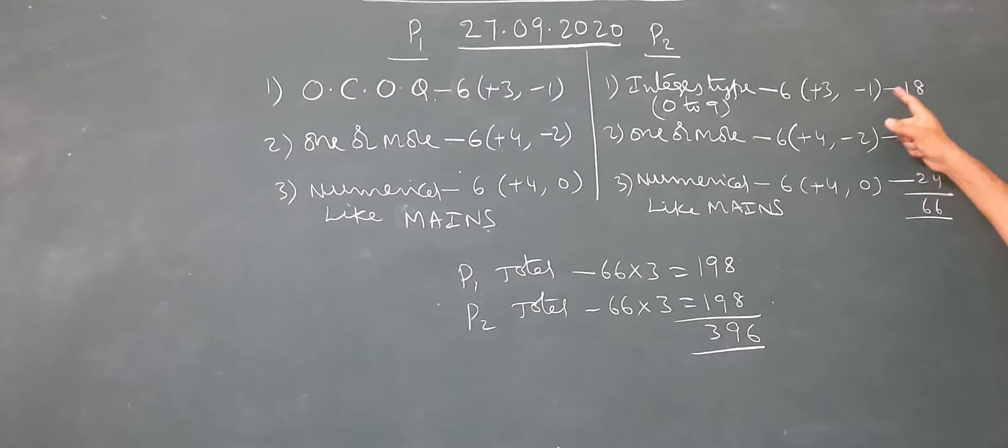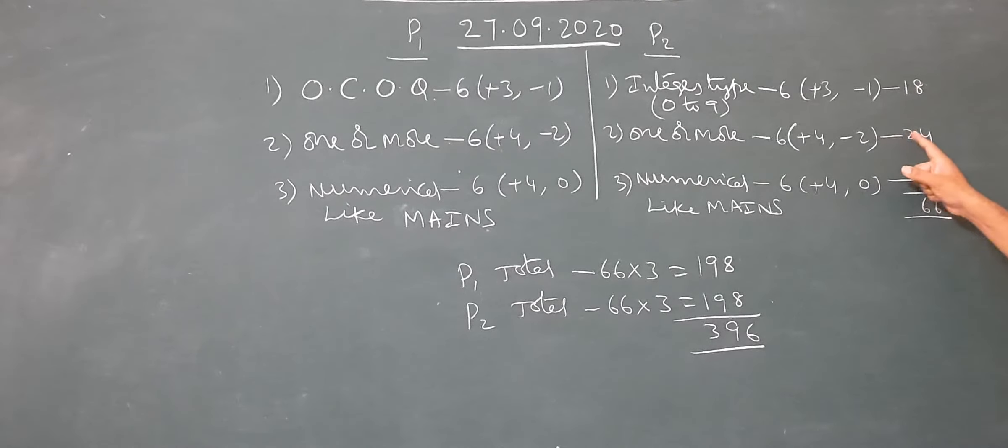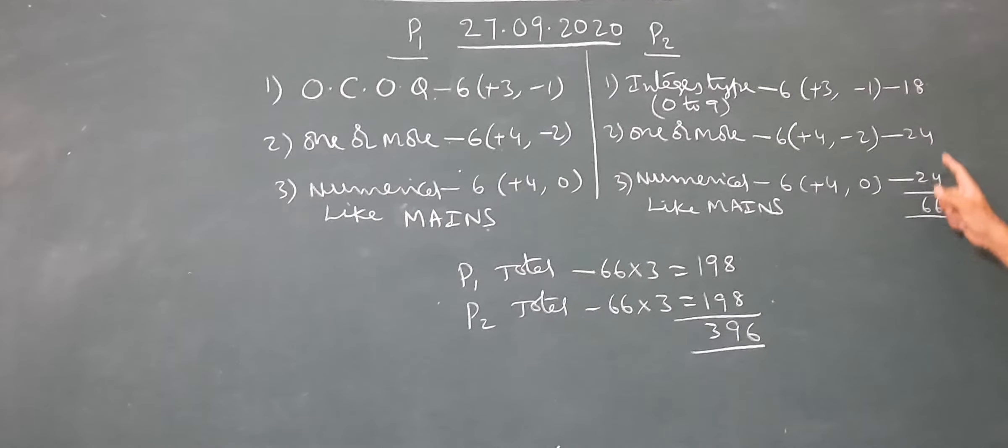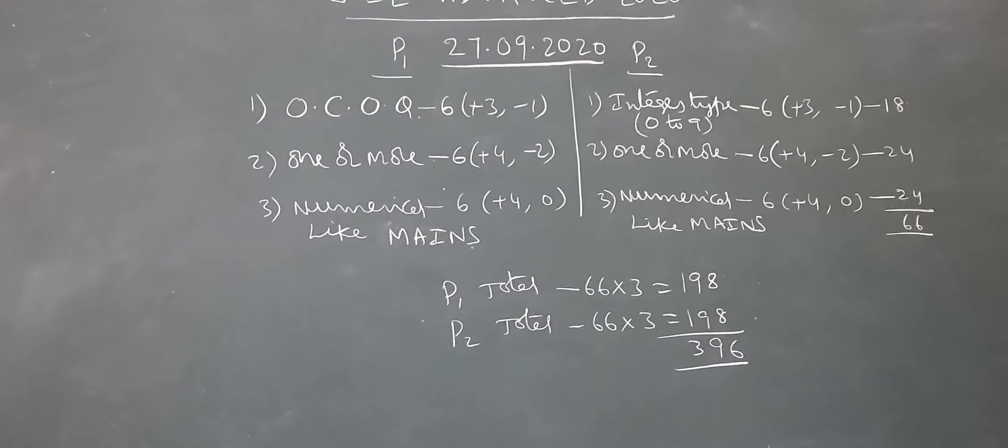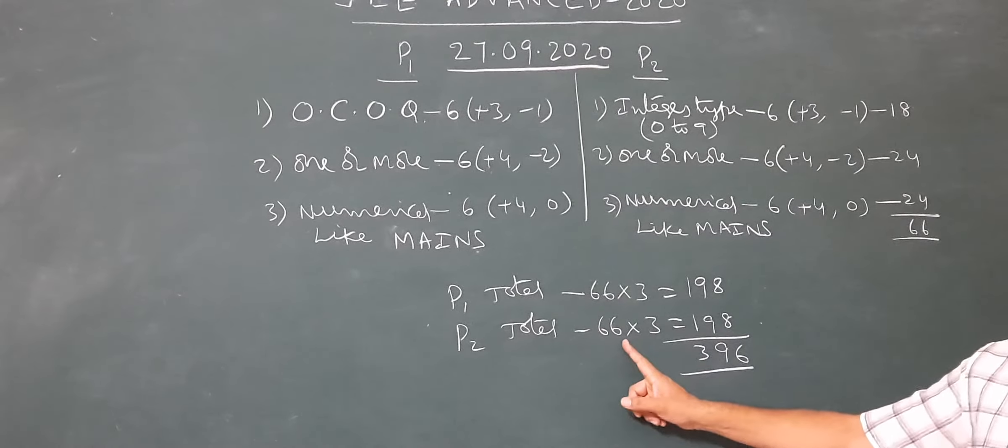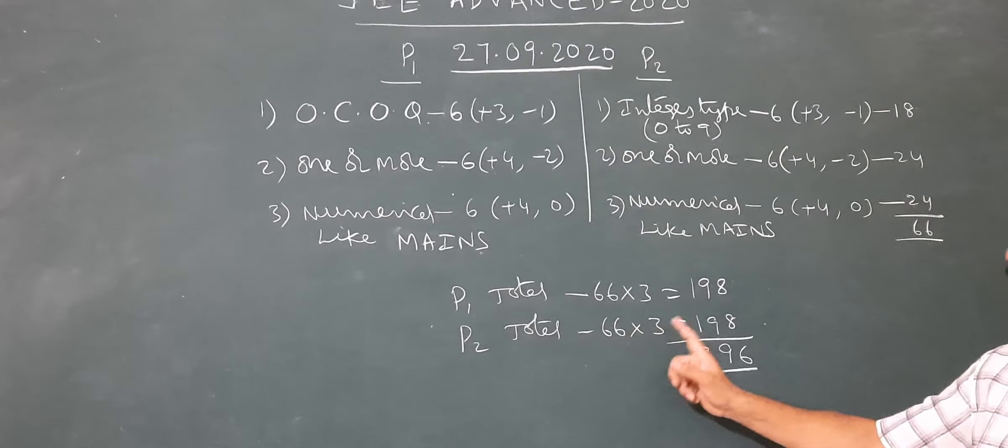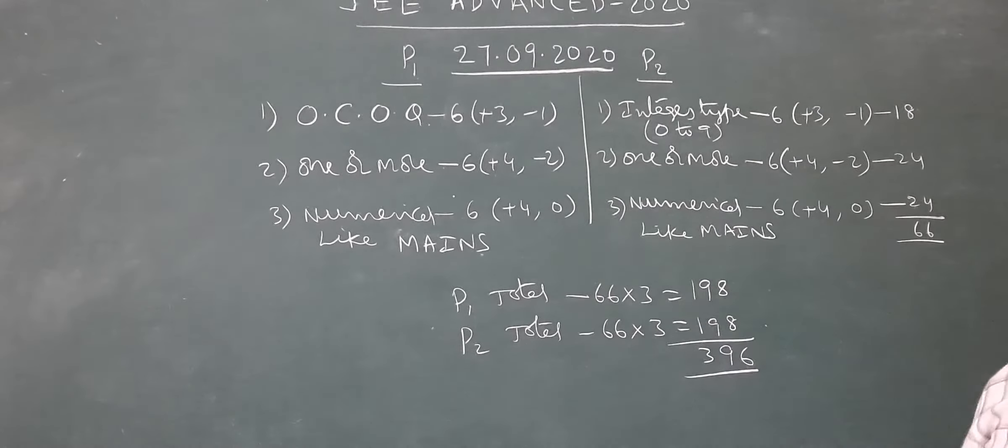So this section weightage total: first section maximum 18 marks, second section 24 marks, third section 24. So total 66. Mathematics 66, physics and chemistry also. Into three, that is 198. Total 396.